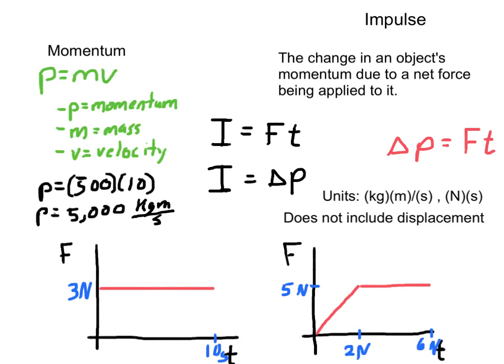Now, impulse is also very simple, but is a lot more interesting. Just calculating the momentum of something, if there isn't a collision, isn't very useful. But impulse uses momentum in a way that can be very neat. Now, impulse is the change in an object's momentum due to a net force being applied to it. I mean, if you think about it, you apply a force to an object. Maybe it's the car's engine applying a force to the car making the wheels turn. It's going to cause a change in momentum.